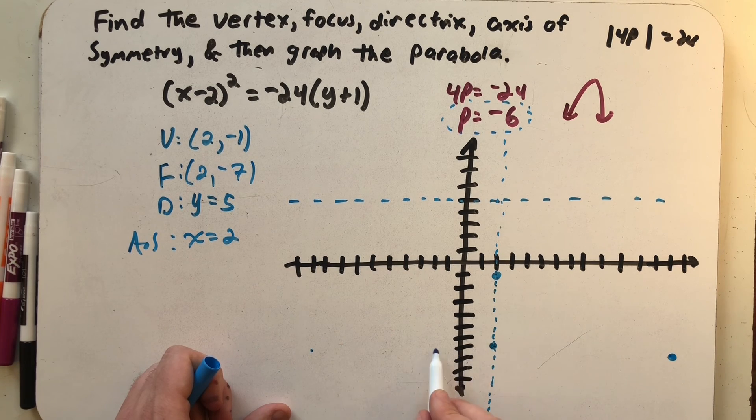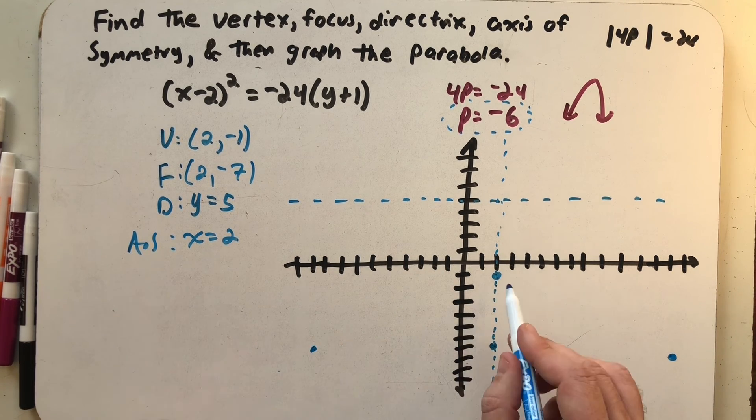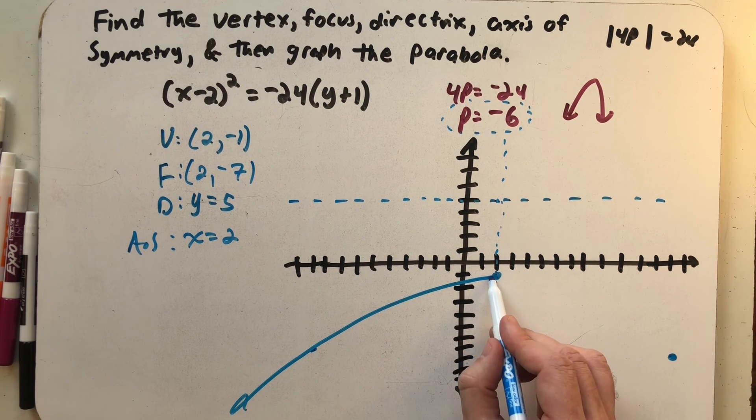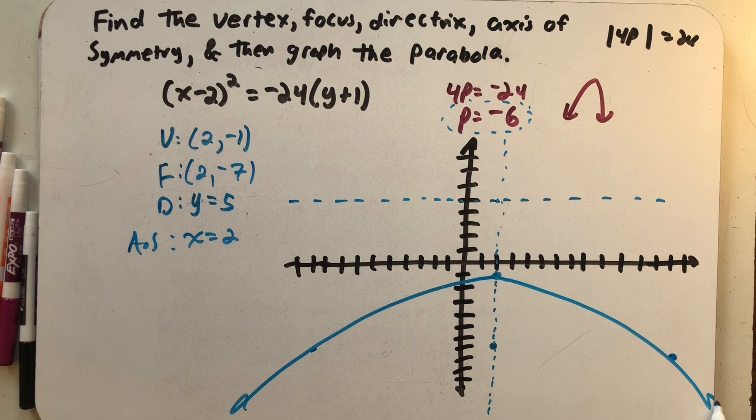Make sure I'm at the right horizontal level there. And I get a pretty wide parabola. And there we have the graph of a parabola whose vertex was not at the origin.